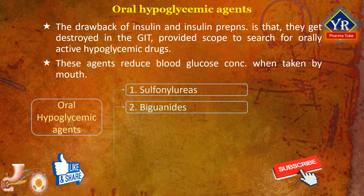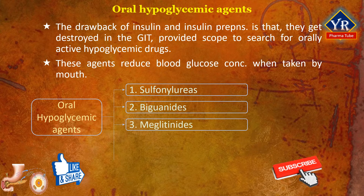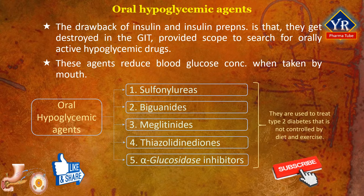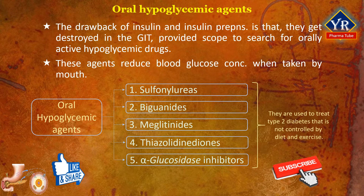Besides these two major chemical categories, certain recently developed drugs include meglitinides, thiazolidinediones, and alpha-glucosidase inhibitors. All these agents are used to treat type 2 diabetes that is not controlled by diet and exercise. These drugs reduce blood sugar by different mechanisms and may be used in various combinations for additive effects. Some are also combined with insulin.